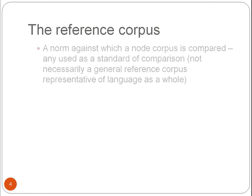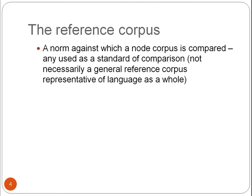Keywords analysis works with a reference corpus, which acts as a standard of comparison — a baseline against which your corpus is compared. In keywords analysis, your reference corpus is simply the corpus against which you compare your node corpus, which can be a general reference corpus, but need not be.